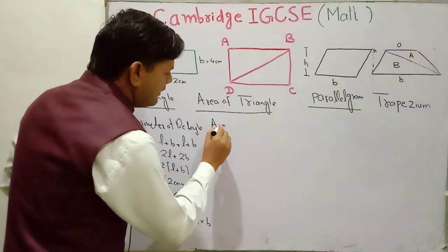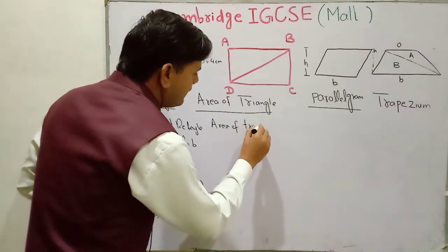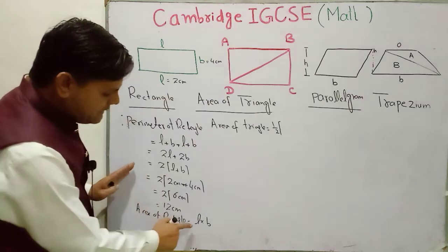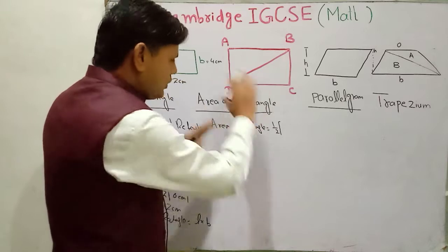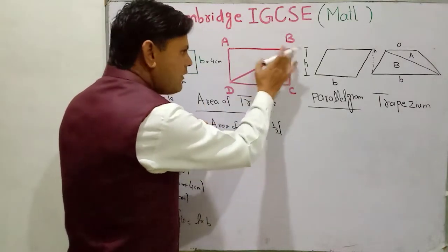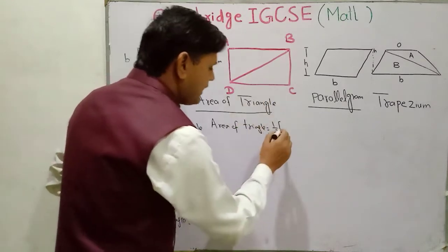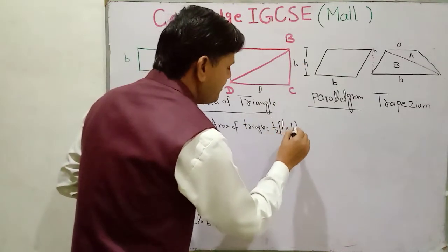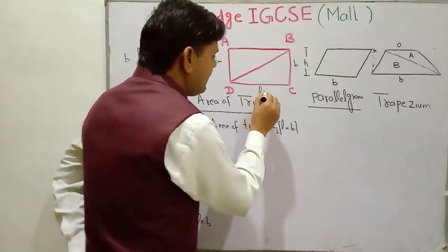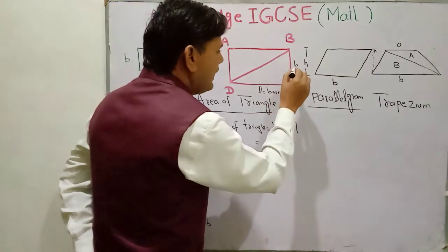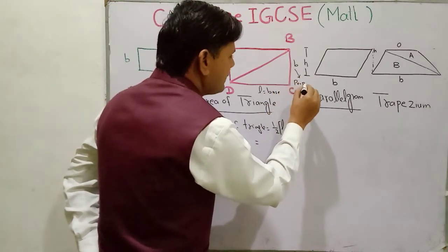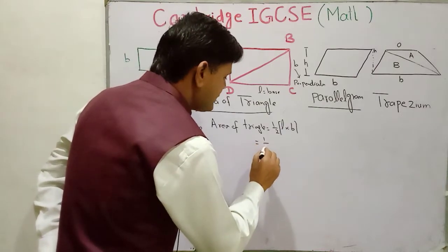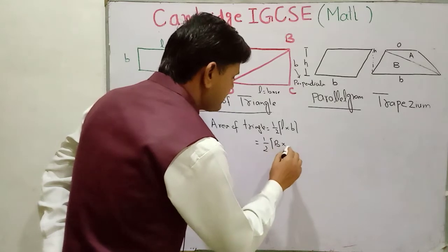Area of triangle is equal to half of the area of rectangle. Area of rectangle is equal to L multiplied by B. So area of triangle is one half of that. Here in the triangle, L is represented by the base and B is represented by the perpendicular or altitude.